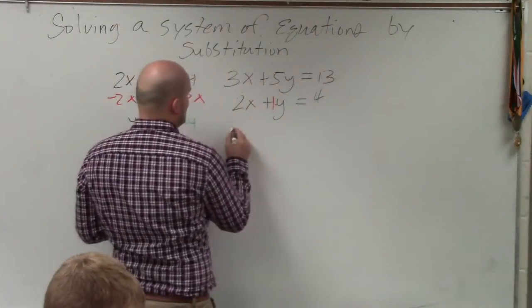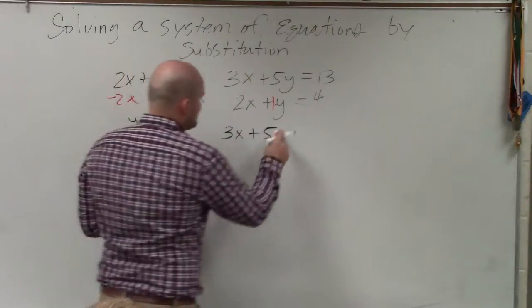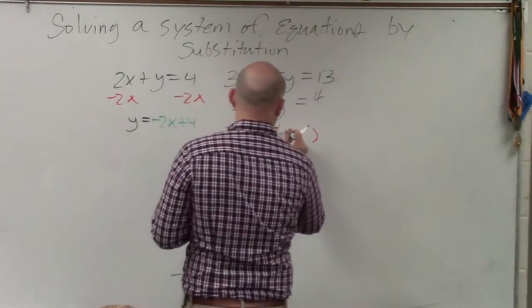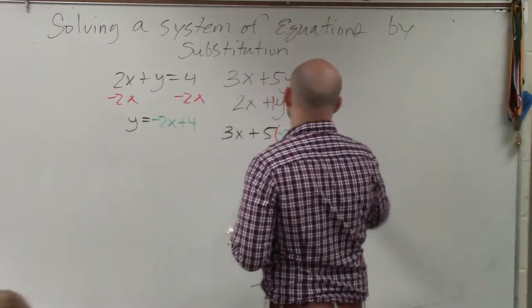So therefore, I rewrite the top equation. 3x plus 5 times y, what y equals, which is negative 2x plus 4. And that is equal to 13.